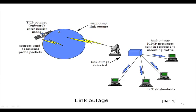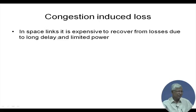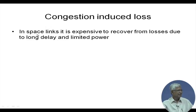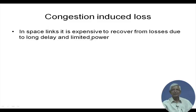In satellite networks there can also be congestion, just like a normal network, when traffic exceeds network capacity. In a space link it is expensive to recover from losses due to long delay and limited power. Therefore a variation of standard TCP called TCP Vegas is used in the space environment.